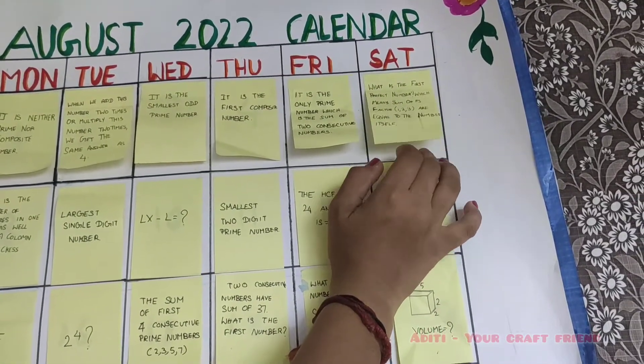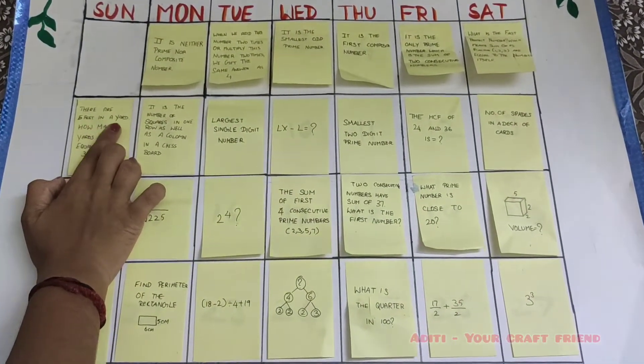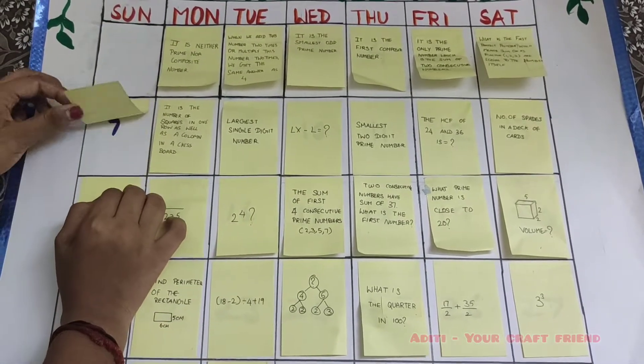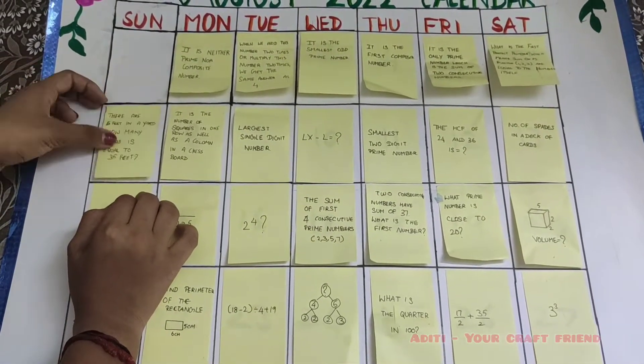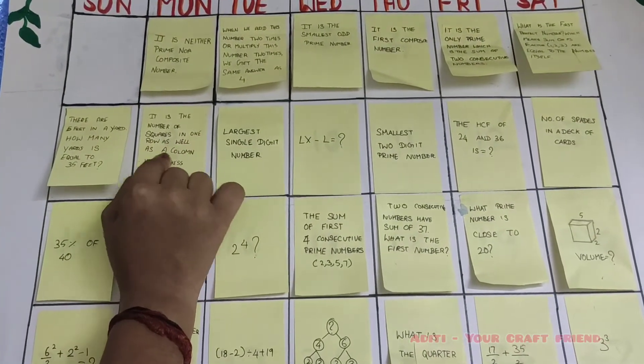There are 5 feet in a yard. How many yards is equal to 35 feet? Yes, it's 7. It is a number of squares in one row as well as a column in a chessboard. Can you guess the answer? Yes, it is 8.